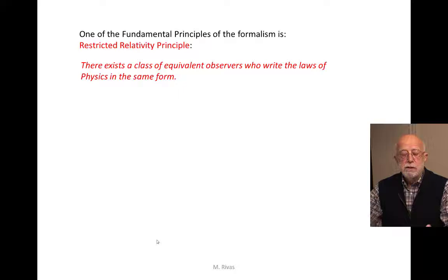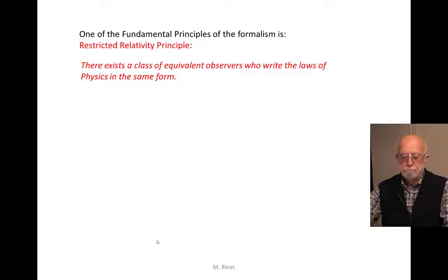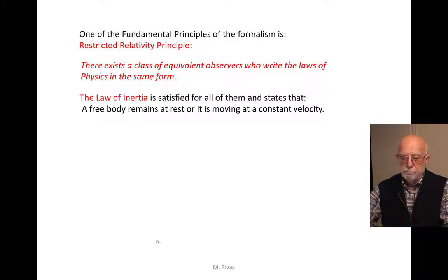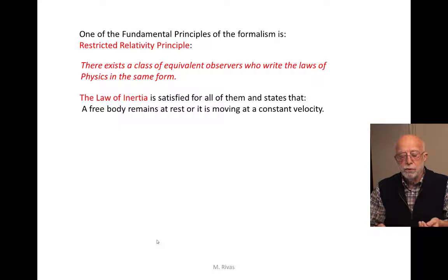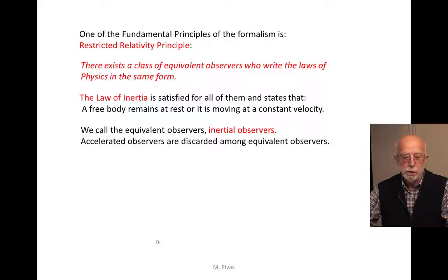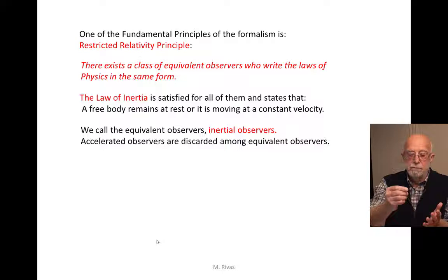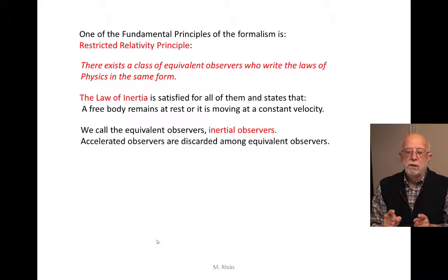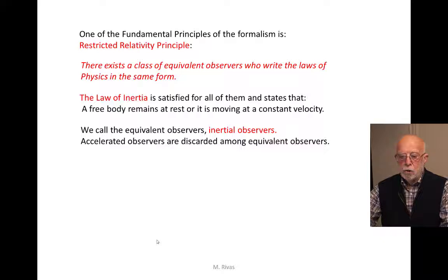One of the fundamental principles of our formalism is the restricted relativity principle, which states that there exists a class of equivalent observers who write the laws of physics in the same form. For all such equivalent observers, one of the laws satisfied is the law of inertia, which means that for an arbitrary inertial observer, every body is either at rest or moving at constant velocity. These equivalent observers are called inertial observers. An accelerated observer is outside this set because if I see free motion of a particle in a straight line, the accelerated observer does not, so it is discarded. We are going to make physics only for this restricted class of inertial observers.